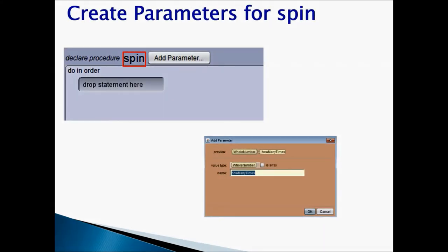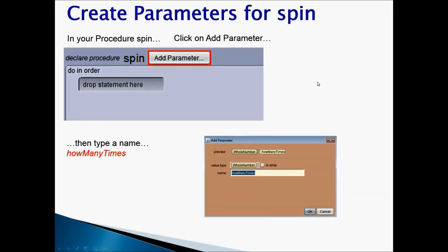Let's take an example how to create parameters for spin. The first thing you need to do is go to your procedure spin. Then click on add parameter. Once you click on add parameter, you'll have add parameter window that pops up. And in here, you're going to type in a name. We're going to say how many times. Because we want an object to spin and I'm going to say how many times you want to spin.